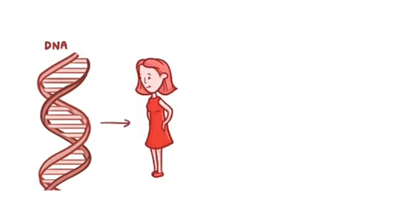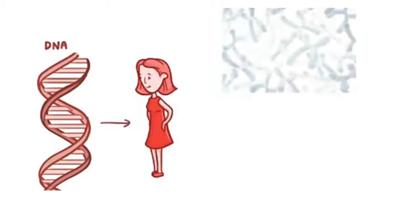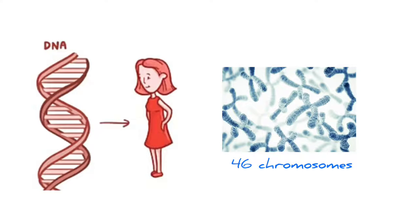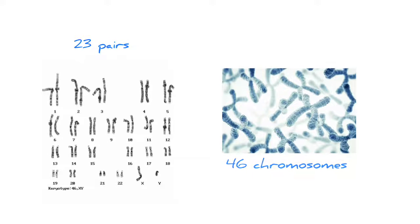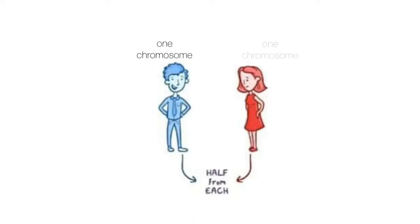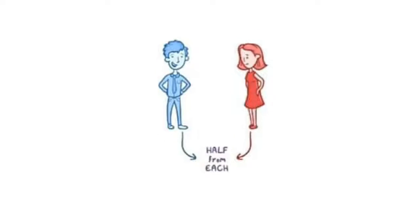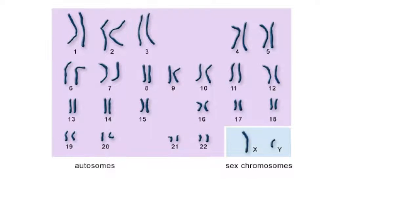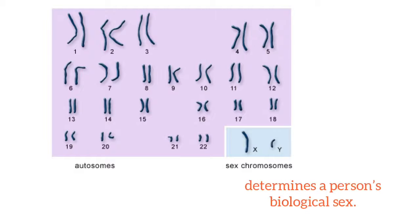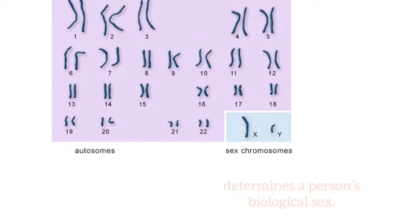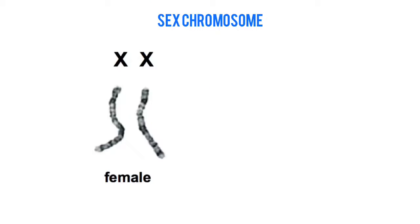Our DNA is a humongous blueprint of information on how to make a human, which is usually packaged up nicely in 46 chromosomes. These 46 chromosomes come in 23 pairs, and each pair has one chromosome from each parent. One of these pairs is called the sex chromosome — it determines a person's biological sex, and can be made with either two X chromosomes for females, or X and Y chromosomes for males.